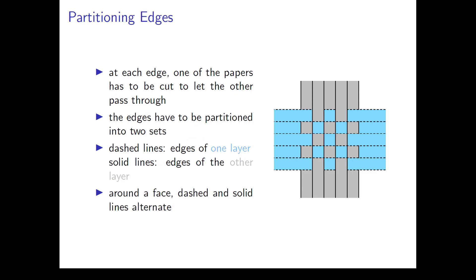To create a paper weaving, we need a cutting pattern. At each edge, one sheet has to be cut to let the other sheet pass through from the lower to the upper level. This partitions the edges of the pattern into two sets, one for each sheet. In our graphics, we usually draw one set by solid lines, the other by dashed lines. Around each face, dashed and solid lines alternate.